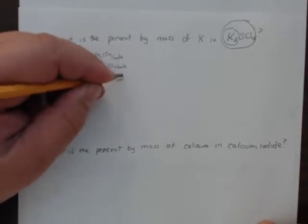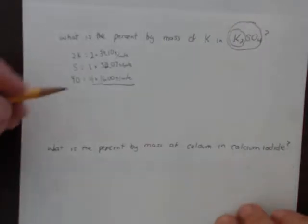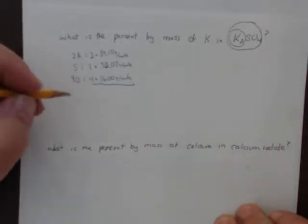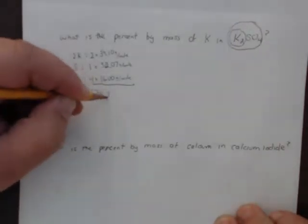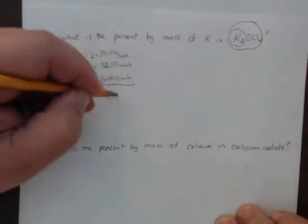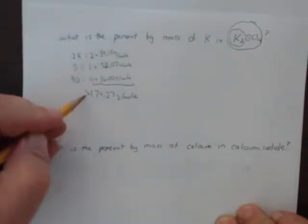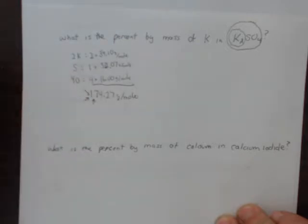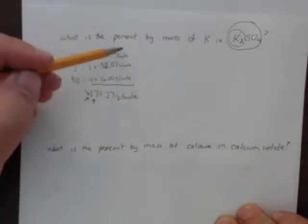The four oxygens are 4 × 16.00 grams per mole. That whole thing totals up to be 174.27 grams per mole — that's your bottom number, your total.